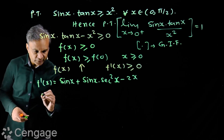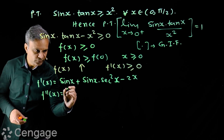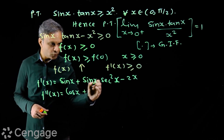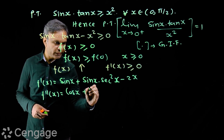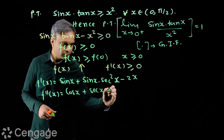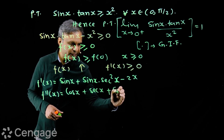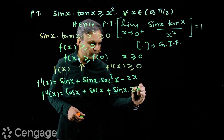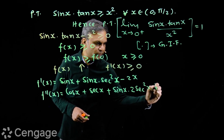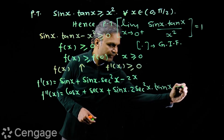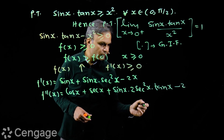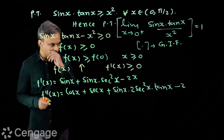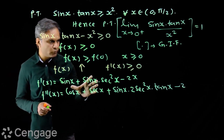The second derivative f''(x) will be: cos x + cos x · sec²x + sin x · derivative of sec²x, which is 2 sec²x · tan x, minus the derivative of 2x which is 2. So we have a minus 2 term. Now can we say something about the sign of this expression?